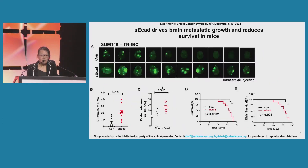We also performed another IBC in vivo study using SUM-149 cells. For this cell line, we injected the control and soluble e-cadherin group via intracardiac injection. The cells were labeled by GFP. If you look at our pictures, you can see clearly that GFP-labeled brain metastasis size and number were significantly higher than those in the control group. The quantification results in panel B show the same. Similarly, the soluble e-cadherin overexpression SUM-149 group had worse overall survival and brain metastasis-free survival compared with control.